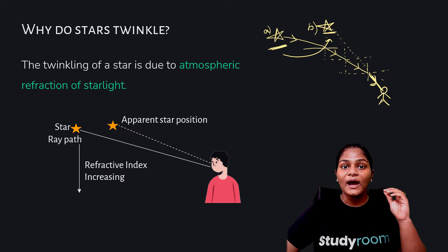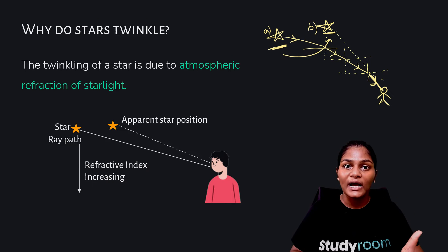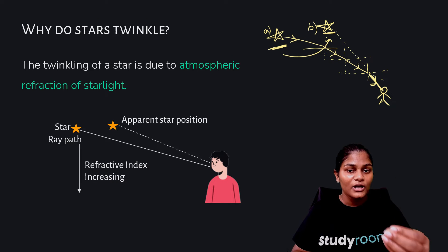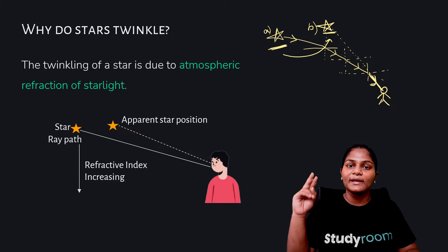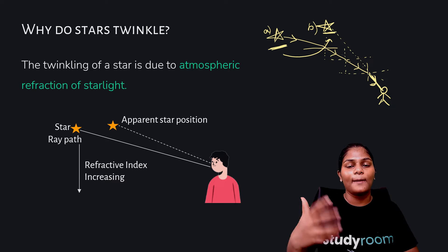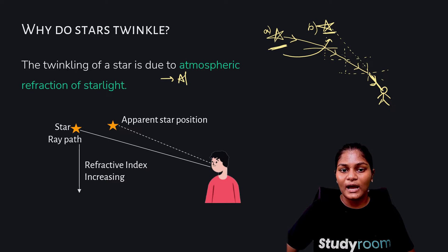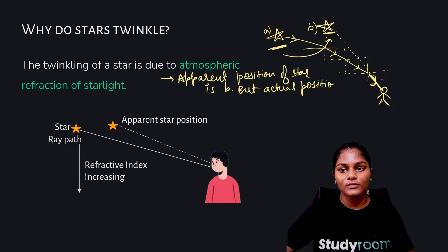We use the term 'apparent position' because point B is where our eyes think the star is, but the star is actually at point A. So the apparent position of the star is B, and the actual position is A. Apparent means that is what it seems like — we don't know if that is the truth, but that is what it seems like.